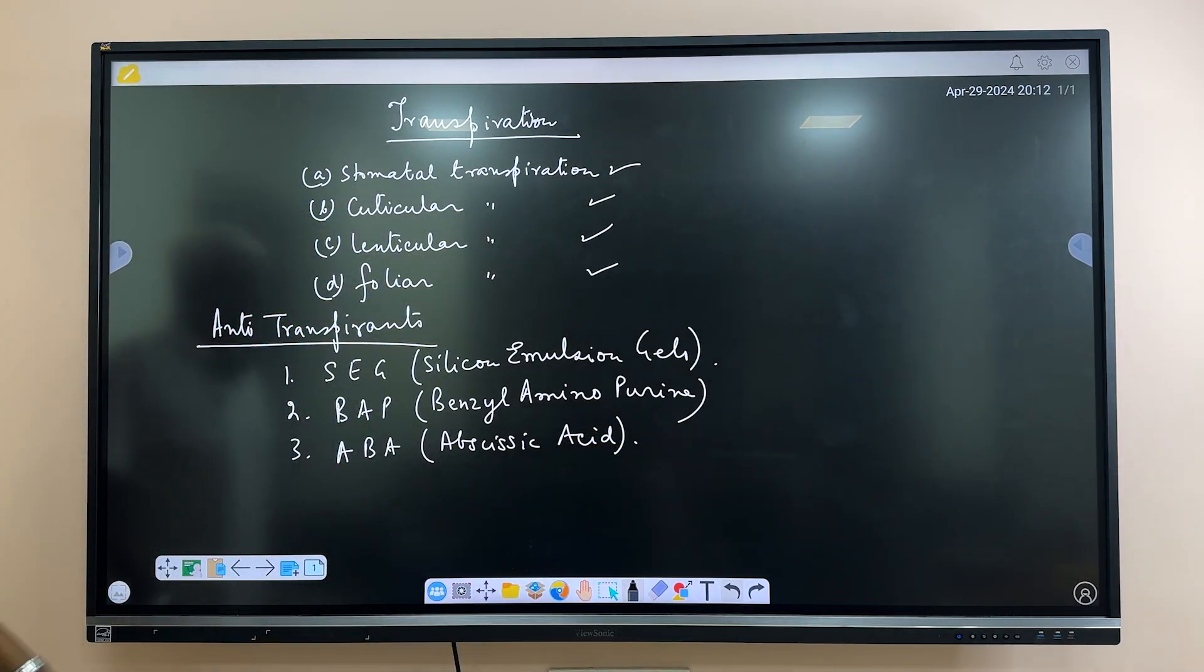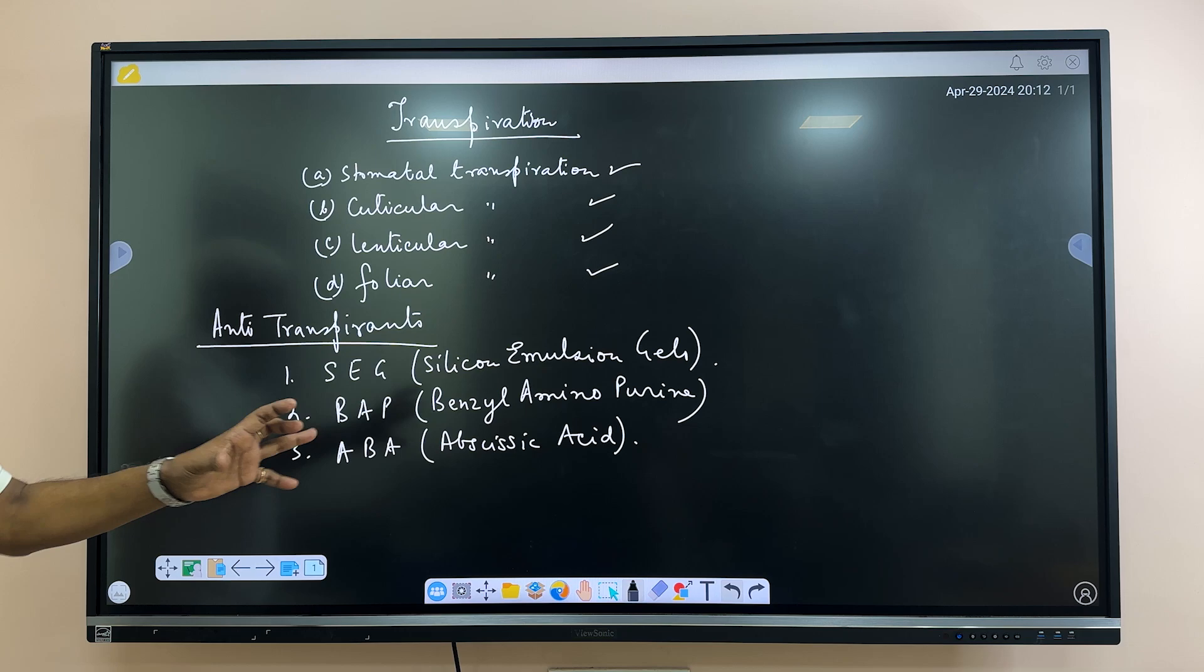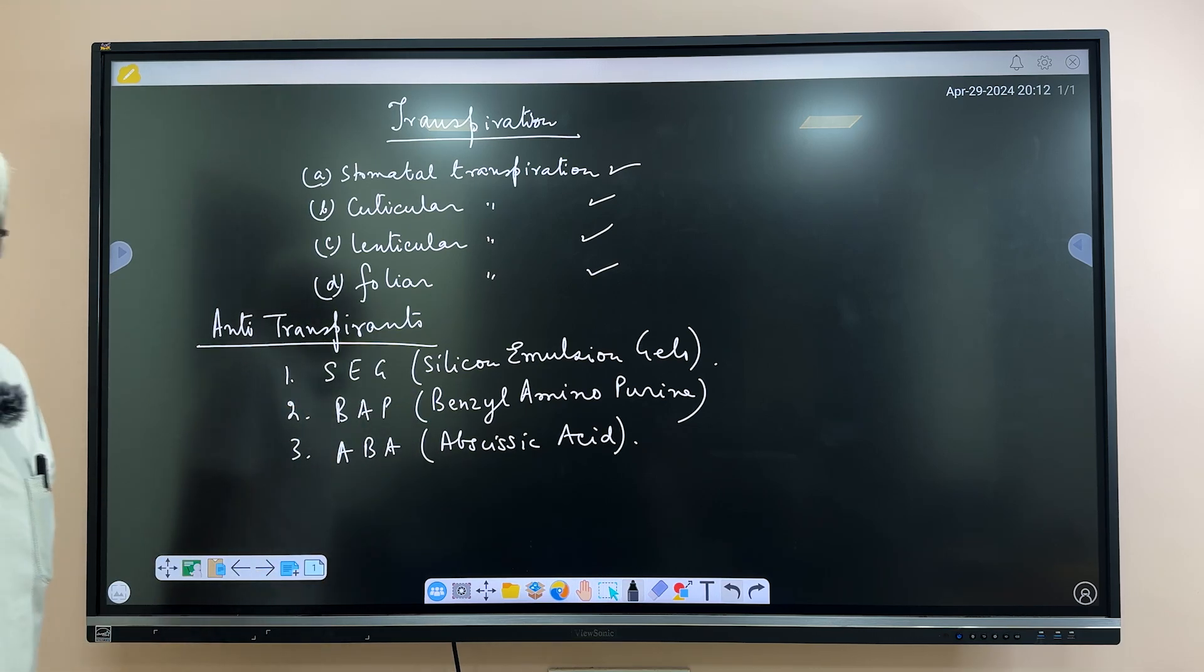So, these are examples of anti-transpirants that are applied to plants. Why we need to use anti-transpirants?